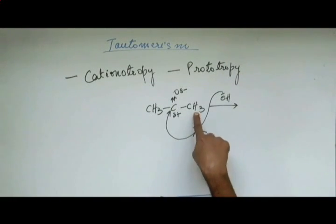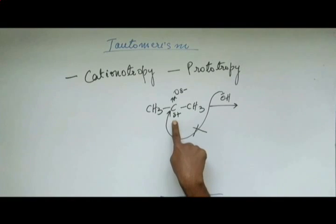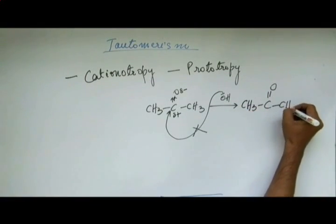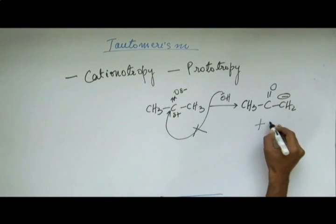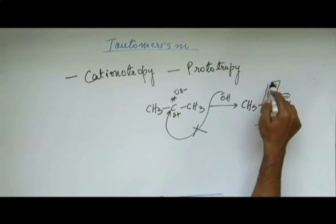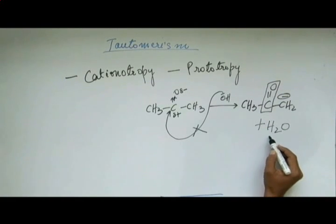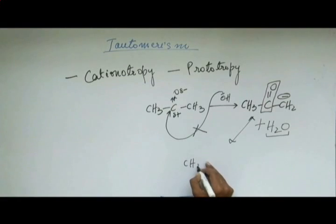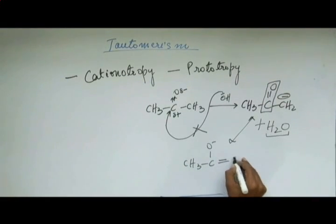So this base will come and abstract the hydrogen from the carbon adjacent to C double bond O. When this happens, our negative charge is developed at the carbon adjacent to this C double bond O. And this OH- abstracts the H+ and is removed as H2O, water. Now, we know there will be a resonance here. If we draw the resonating structure, then the negative charge on carbon will migrate to oxygen, which is the more stable position for that negative charge.